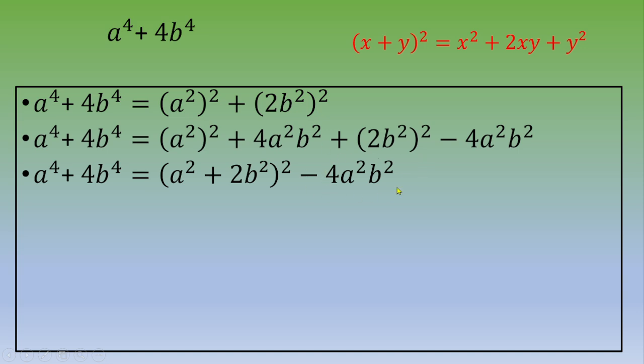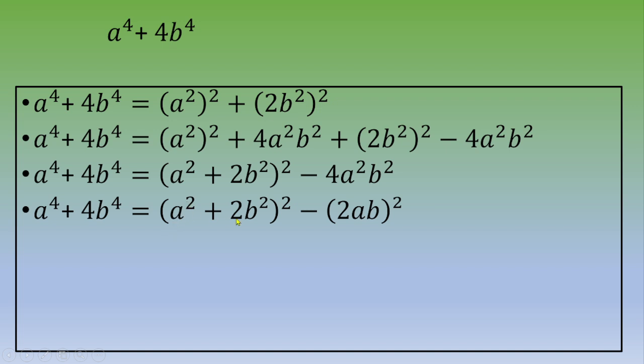And this second term, 4a squared b squared, we can write as a squared plus 2b squared squared minus 2ab squared. So this time we've got a subtraction.